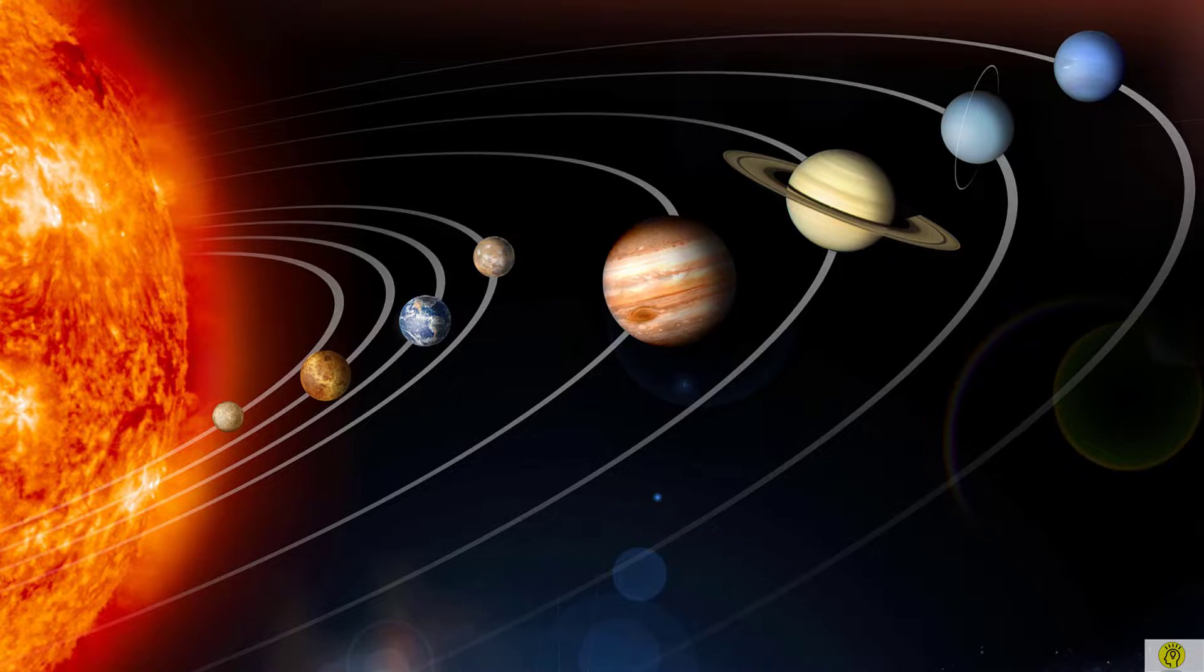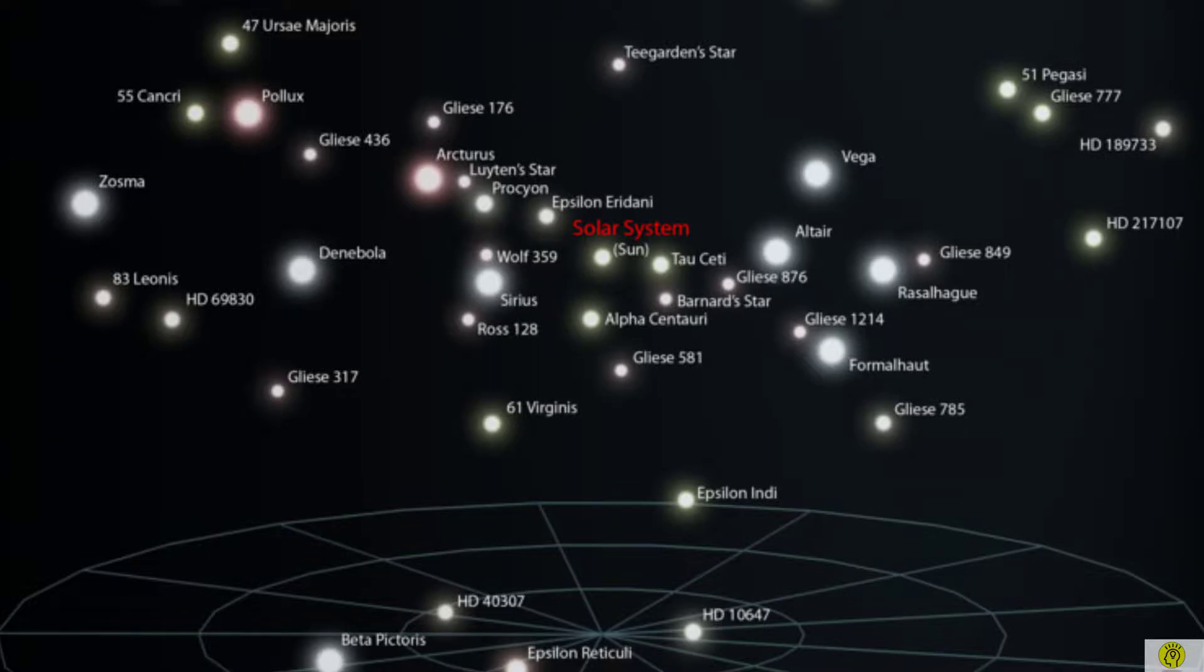Next let's consider how the star in the solar system, our Sun, is located compared to surrounding stars. Here you can see the surrounding stars of our Sun. Closest star to our Sun is Proxima Centauri.